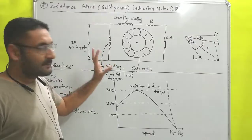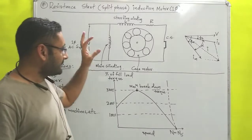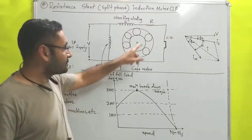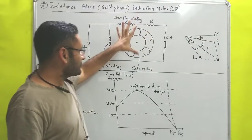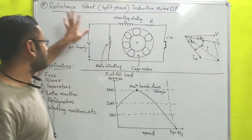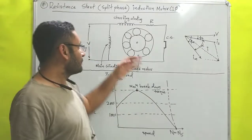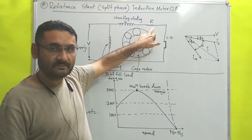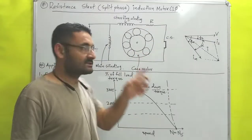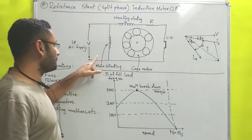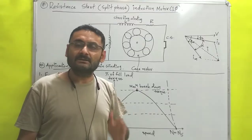This type of motor is a type of single phase induction motor, and in this motor starting torque is produced with the help of a resistance R. With the help of this resistor, the motor is started — that is why it is known as a resistance start induction motor. A question may arise: how can we start the motor with the help of a resistor? The answer is that the resistor will produce a phase difference between the two currents flowing from the main winding and from the starting winding.